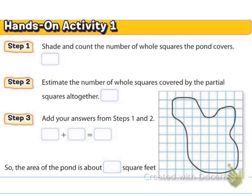Step one is to shade in and count the number of whole squares the pond covers. So I'm going to zoom in this picture of the pond and we're going to shade in each whole square that we have. So here's 1, 2, 3, 4, 5, 6, 7, 8, 9, 10, 11, 12, 13, 14, 15, 16, 17, 18, 19, 20, 21, 22, 23, 24, 25, 26, 27, 28, 29, 30, 31, 32, 33, 34, 35. So I'm thinking it's 35.